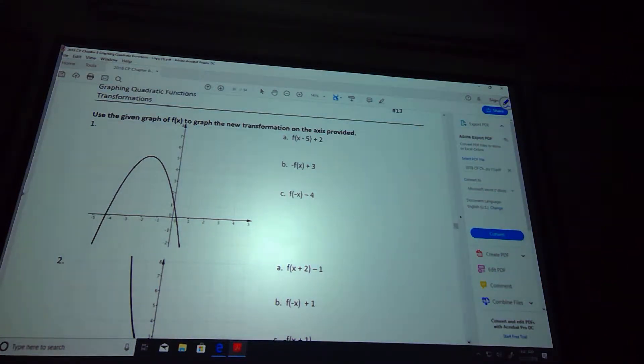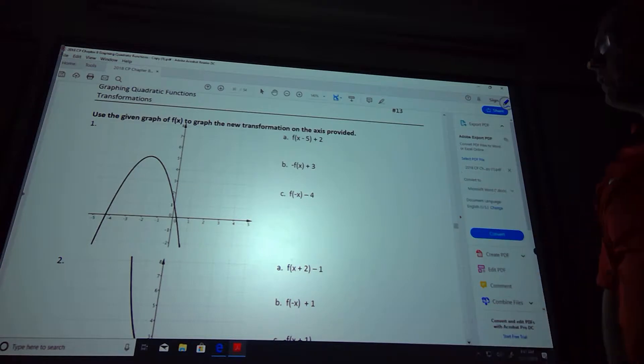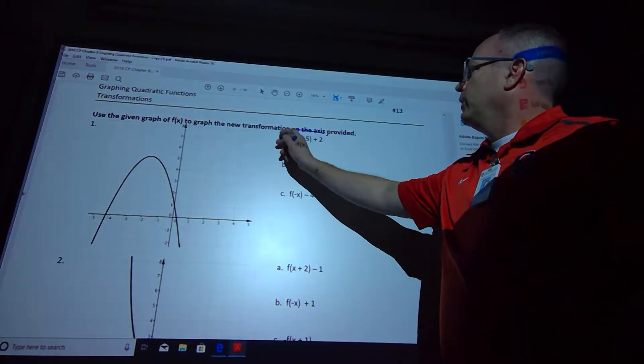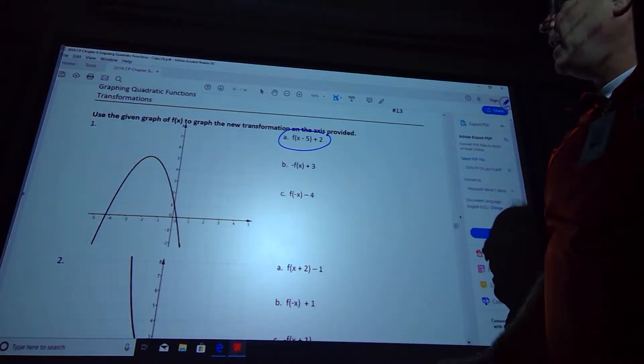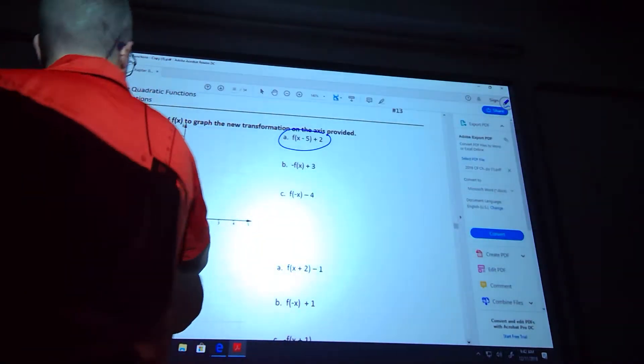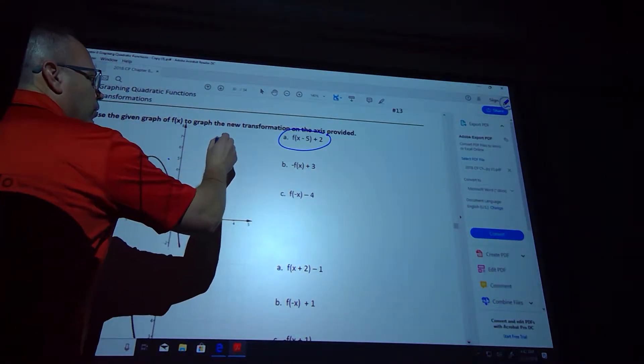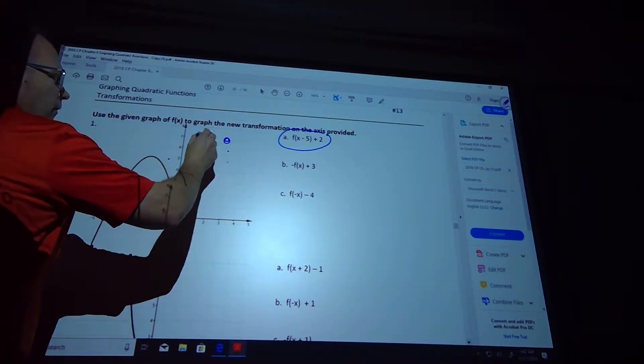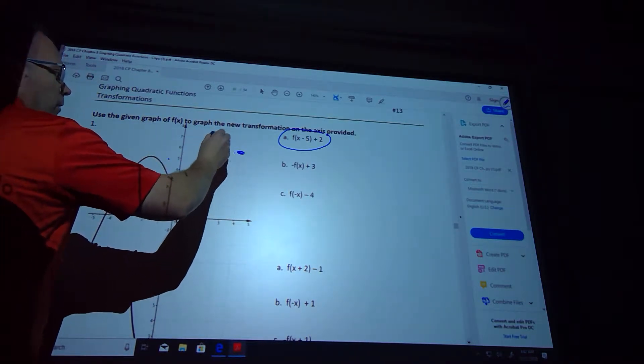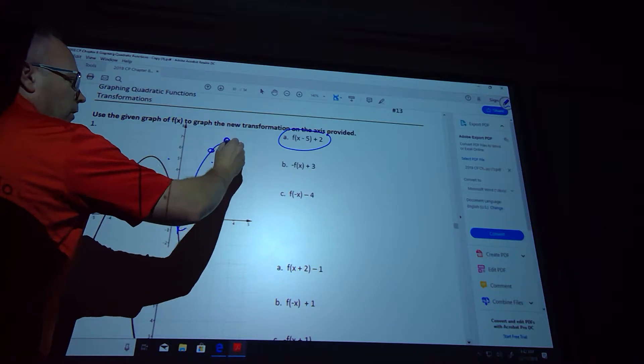We are going to graph the new transformation. So we're given a graph on this one. This is going to shift right 5 and up 2. So I'm going to take my vertex and I'm going to go right 5: 1, 2, 3, 4, 5, up 2. Looks like when I pattern graphed, it's still right and left, and I'm going down 1. So that's the first one.